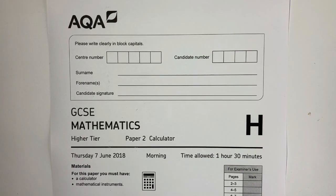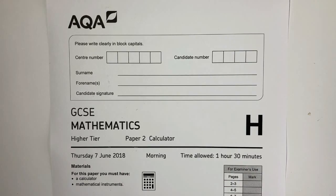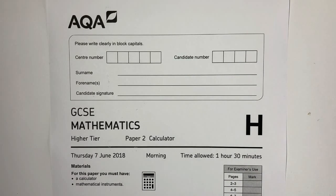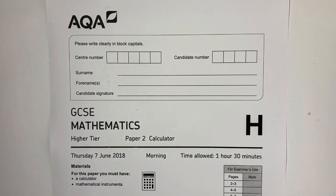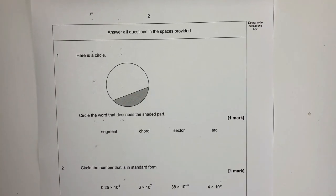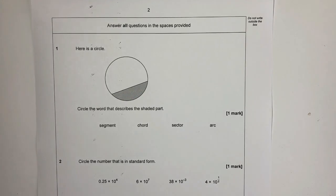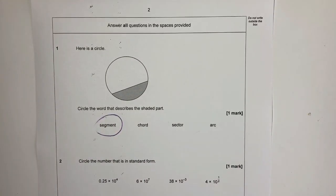Hi, in this playlist we're going to be looking at the AQA higher tier paper two from June 2018. So as I mentioned in the intro, please do stop the video and have a go at each of the questions. So onto question number one, it says here is a circle and we've been asked to circle the word that describes the shaded part. Well, that's actually the segment of a circle, so if you circle that you're going to get one mark for it.